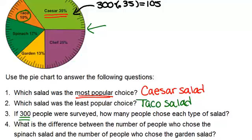For the chef salad, you're going to do 0.25 times 300, and you get the result of 75 people.